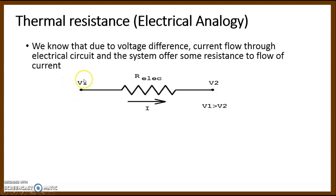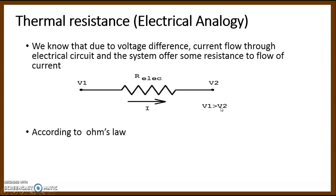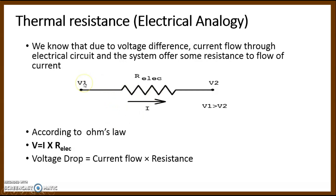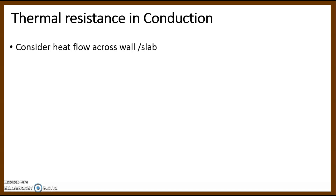Here we understand with the help of a figure: we have one electrical resistance, with voltage difference V1 and V2. Current flows from higher voltage to lower voltage, meaning V1 is greater than V2. From Ohm's law, voltage V equals IR — voltage drop equals current multiplied by resistance. So for this circuit: V1 minus V2 equals I into R, where R is the resistance of the system and I is the current flow.